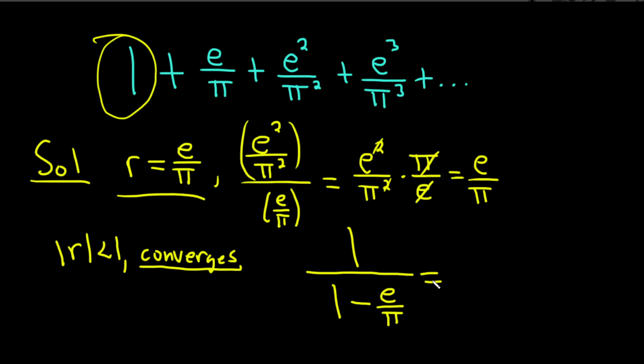Now, we could clean this up. Let's do that. But I'm going to multiply this by pi over pi, which is basically multiplying by 1. So this is pi over... Here, this pi on the bottom, it's going to get distributed. So pi times 1 is pi, and then pi times e over pi is just e. So we have the cool answer of pi over pi minus e. Kind of a fun geometric series. I hope it's been helpful. Good luck.